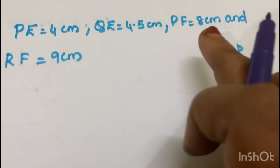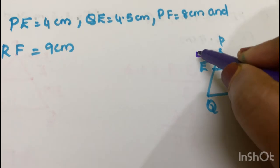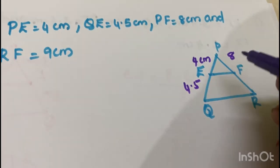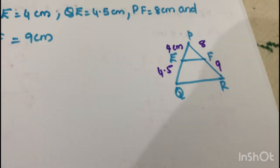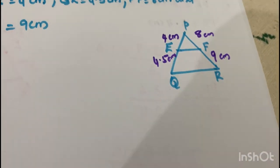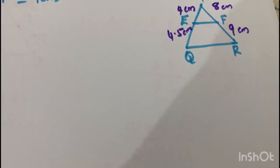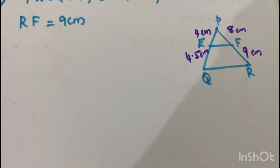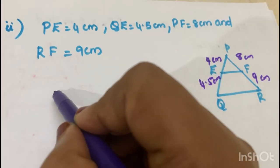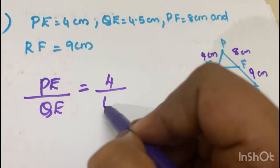Now the second case: PE is equal to 4 cm, QE is equal to 4.5 cm, PF is equal to 8 cm, and FR is equal to 4.5 cm. We will check whether this one is parallel to QR by finding the ratio PE by QE.